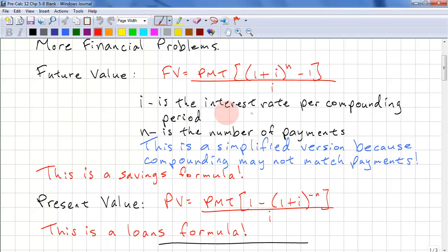i is the interest rate per compounding period, n is the number of payments. Note that this is a simplified version of the future value formula because compounding periods don't necessarily match the payment periods. This is a savings formula.